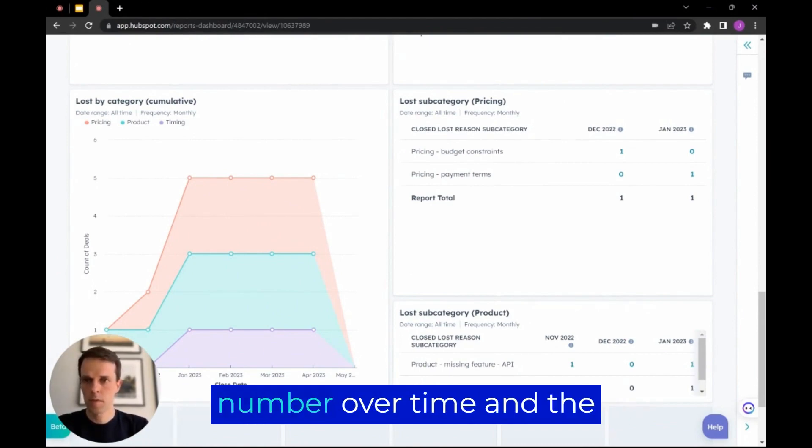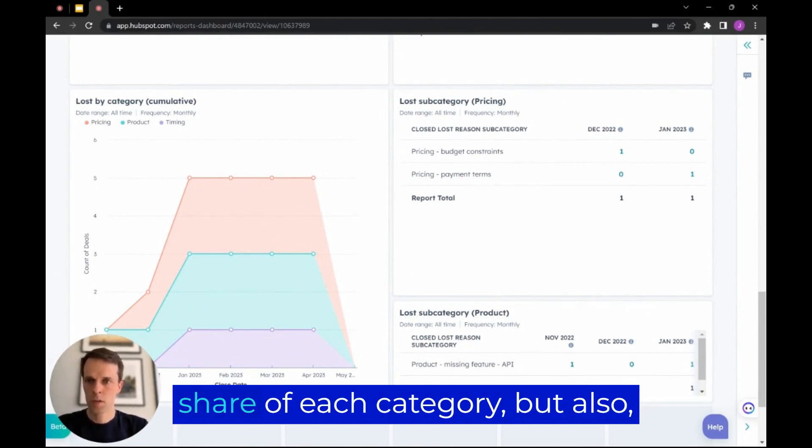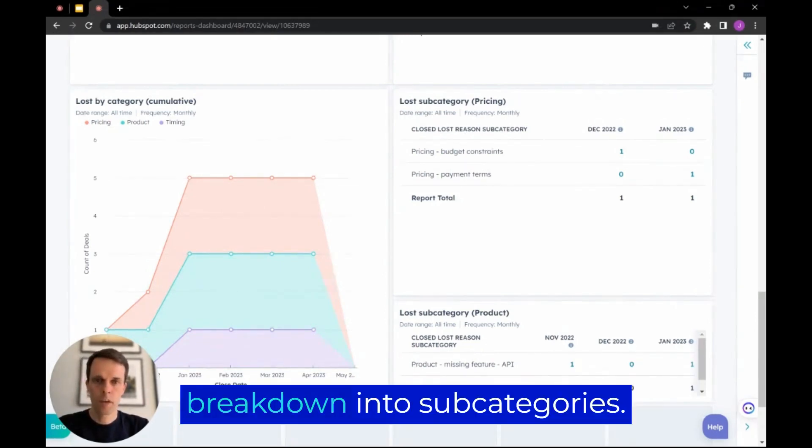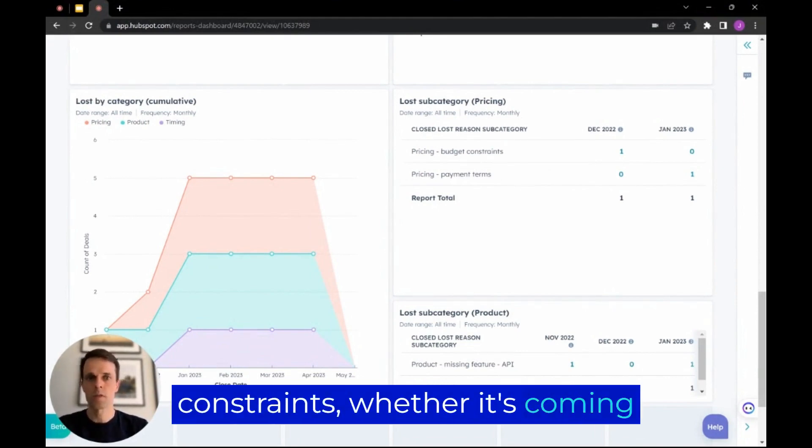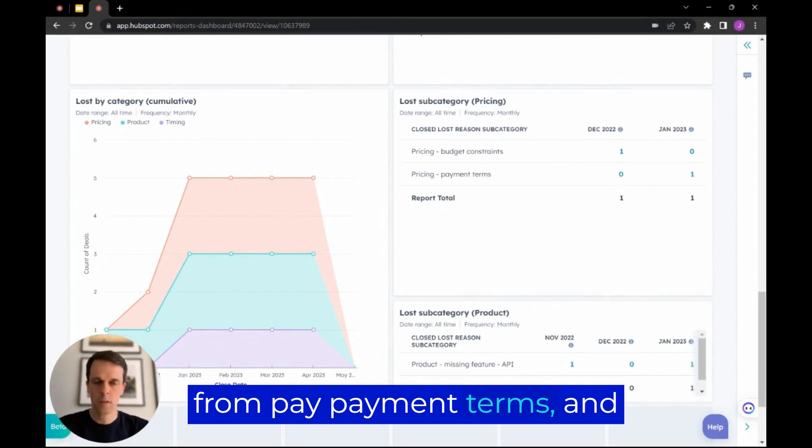So you can see the cumulative number over time and the share of each category, but also break down into subcategories. So for pricing, whether it's coming from budget constraints, whether it's coming from payment terms and the likes.